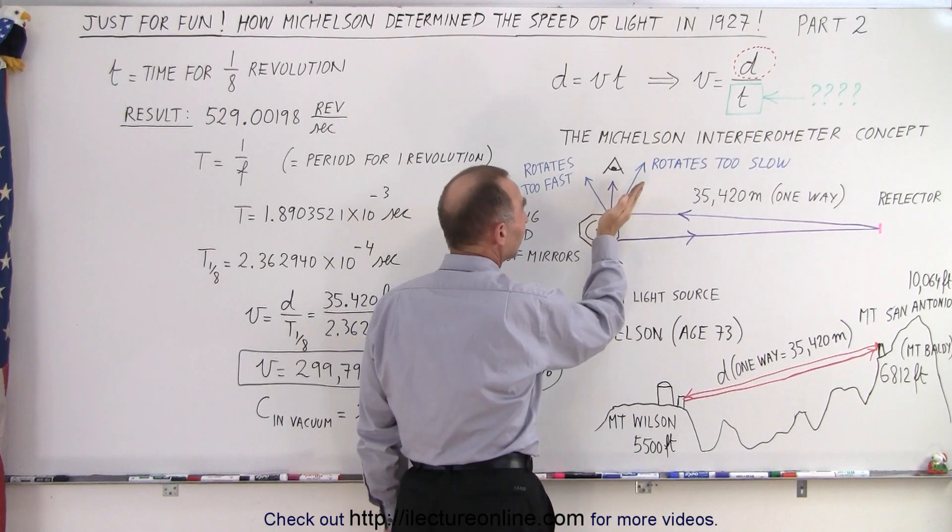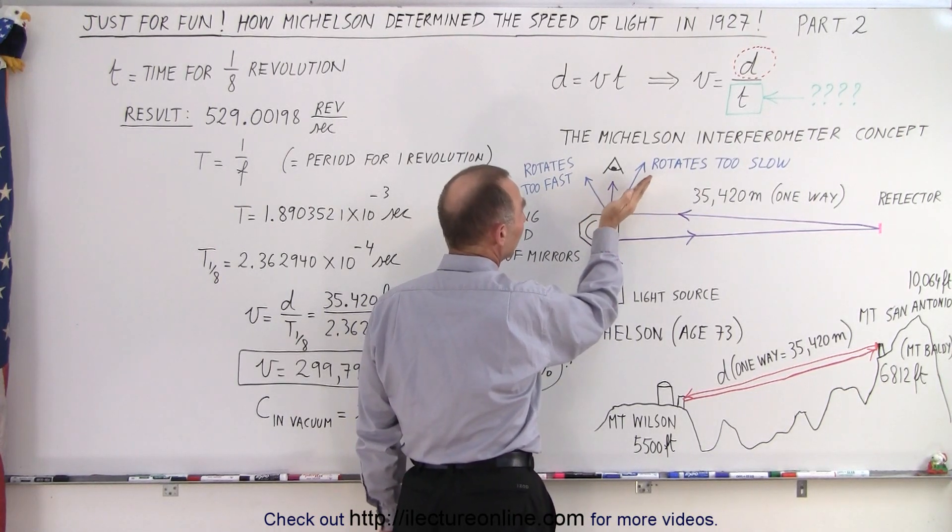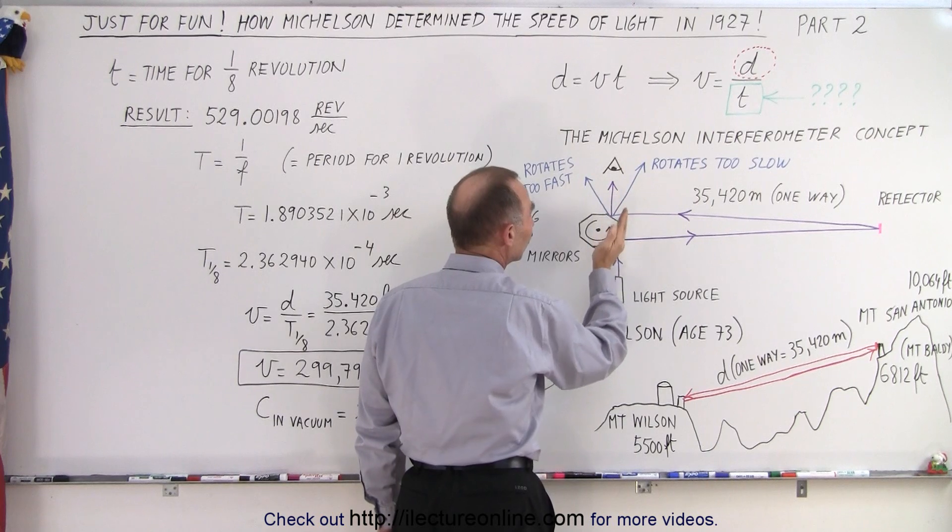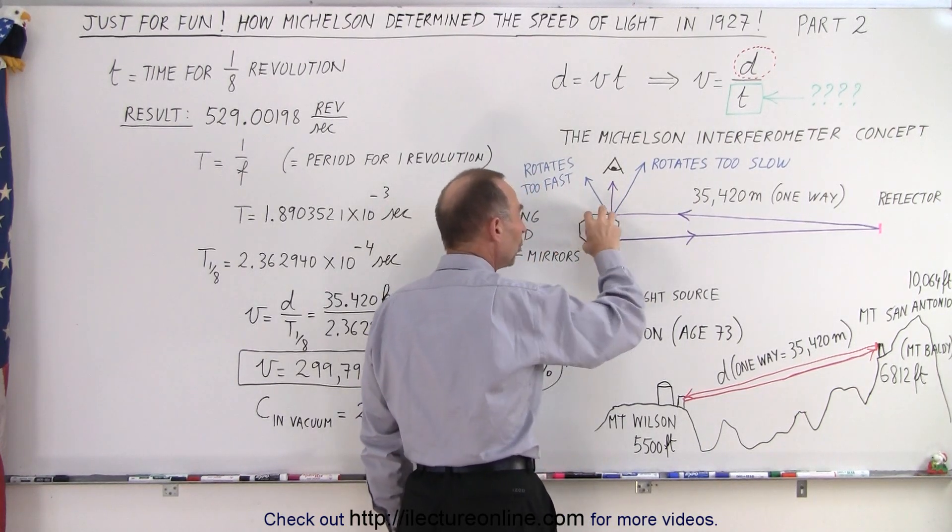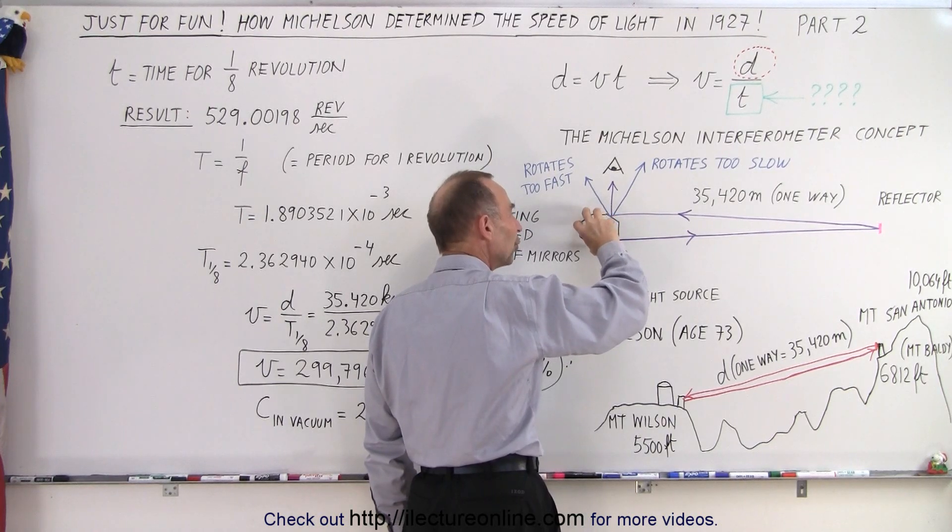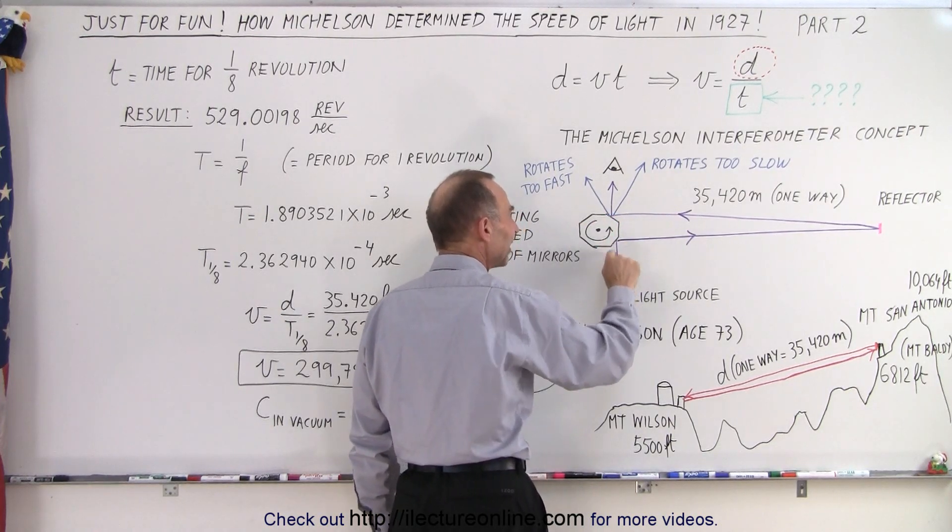Then what happens is you keep speeding up the rotation in such a way that the light reflector would begin to rotate to an angle like this. At some point, if the rotation is just fast enough so that the whole wheel would rotate through one-eighth of a turn in the time that it takes light to go from here to there and back,